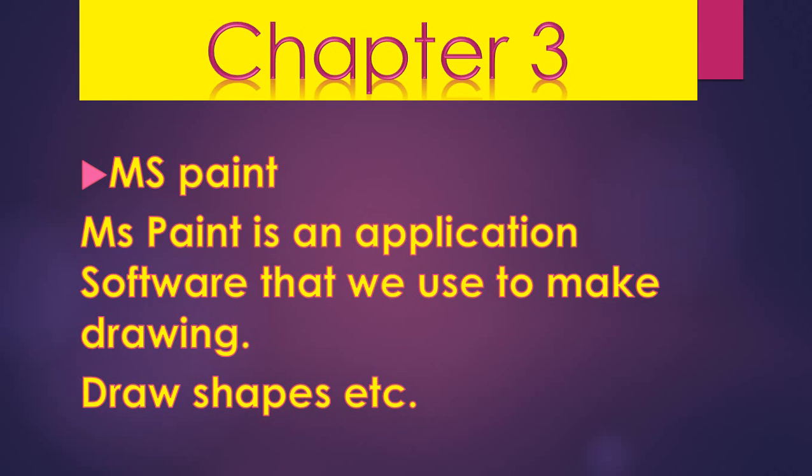MS Paint is an application software that we use to make drawings and draw shapes. In our previous video, we also talked about application software needing system software. So MS Paint is application software which needs the operating system to work.